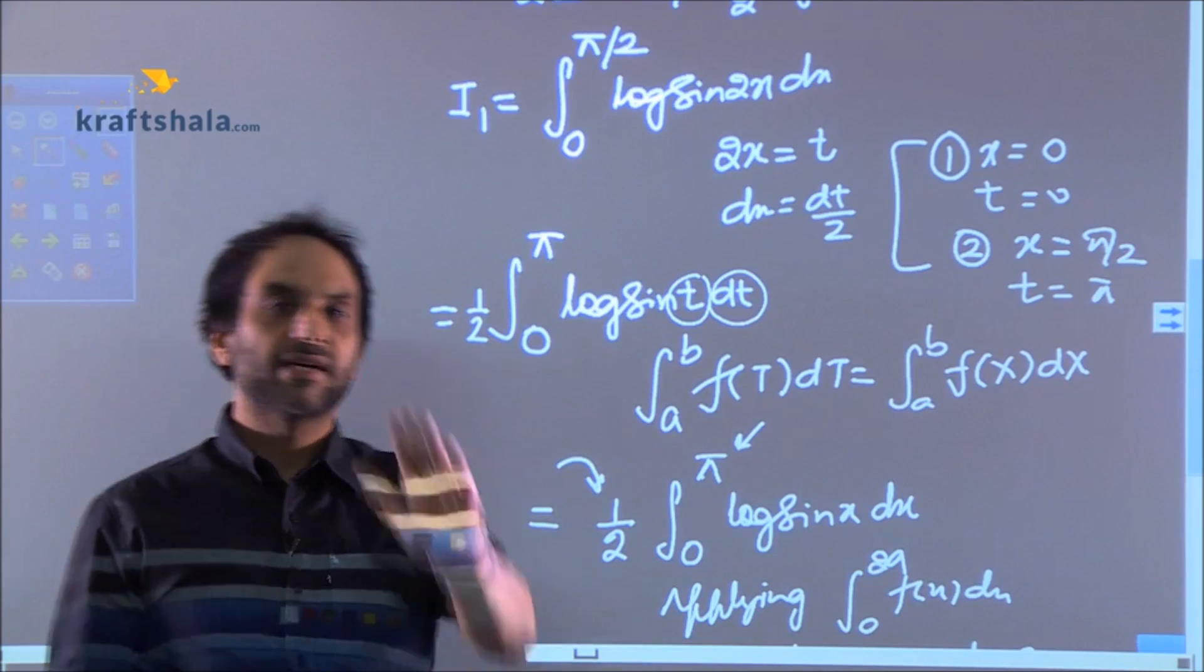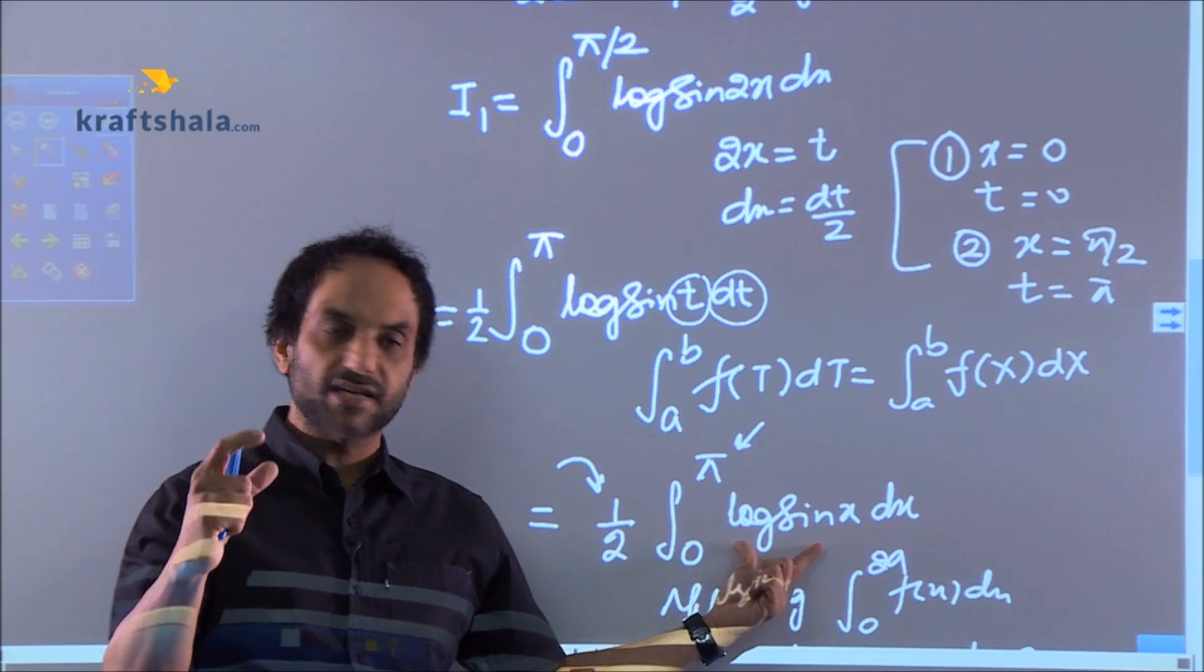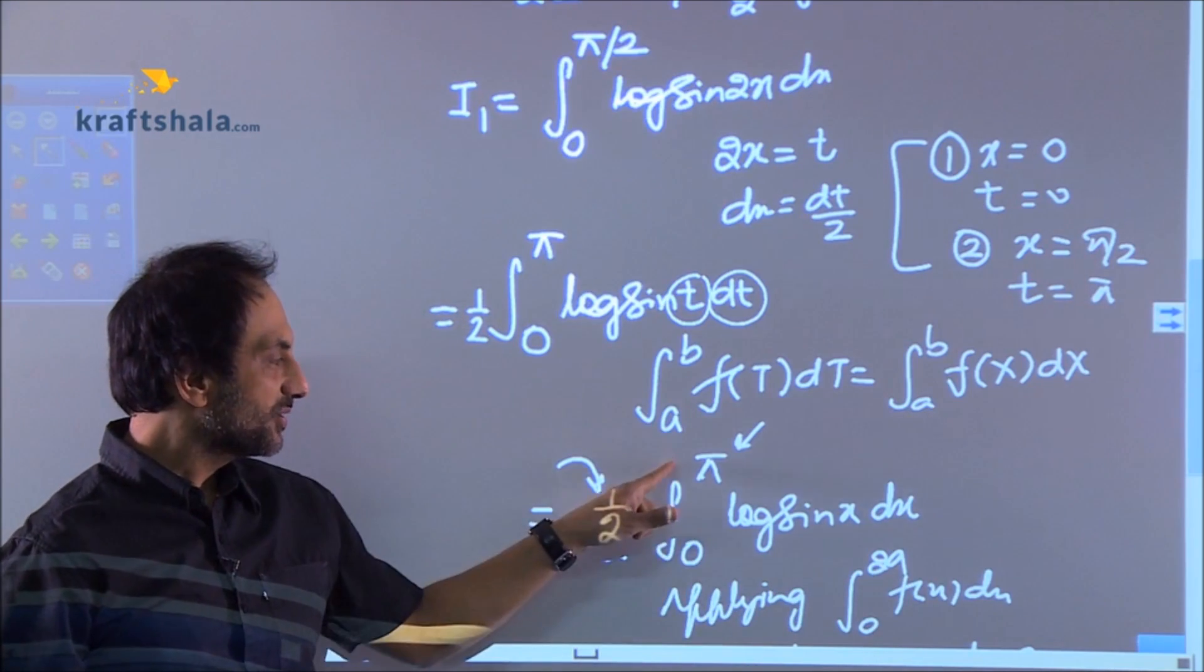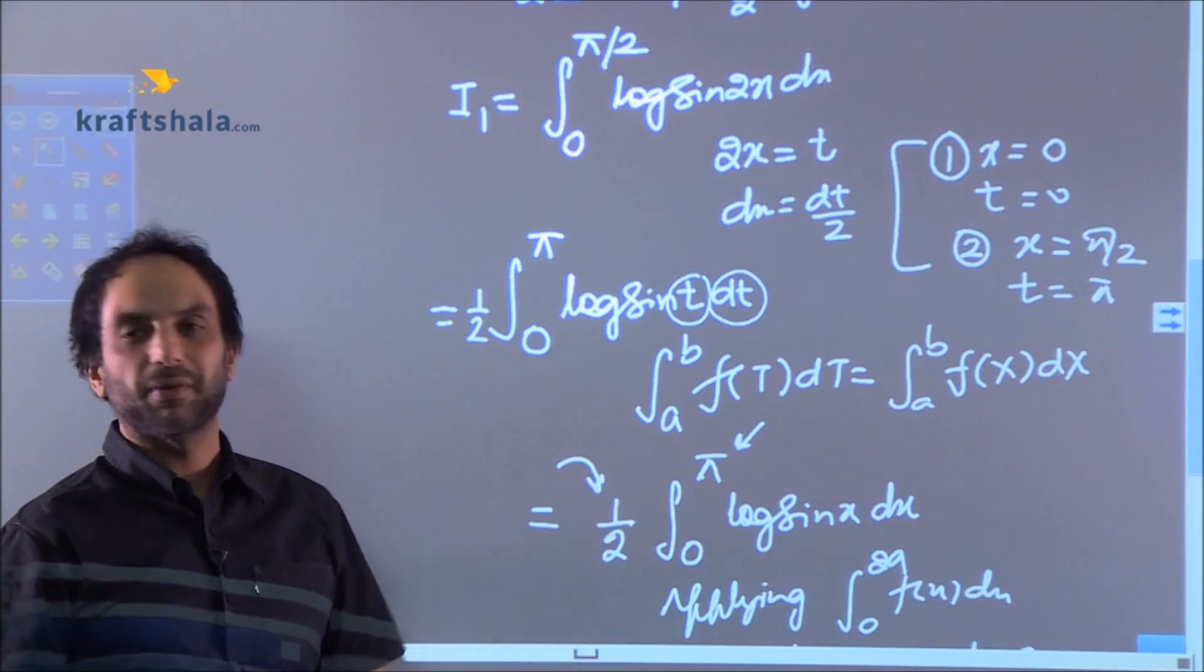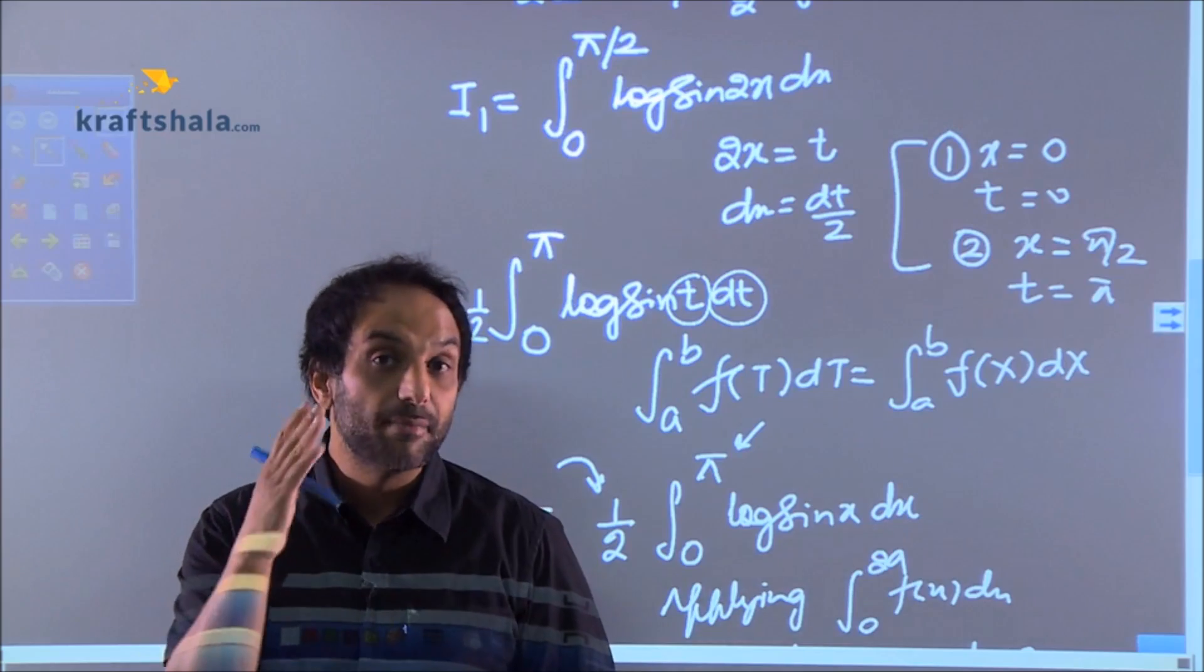Never say that we are back onto the question. No, only the expression is same. You are missing on the limits. The limits were 0 to π/2 and we have 0 to π. Now the third phase comes that we had to work on the limit part.